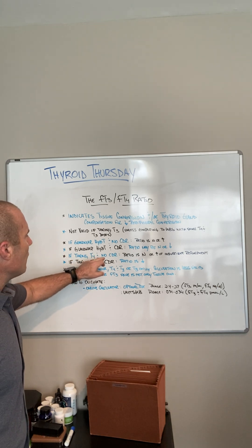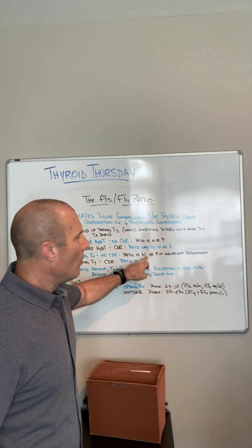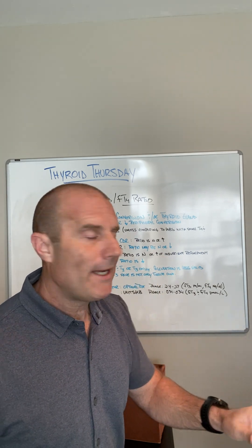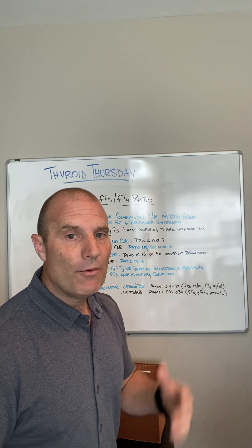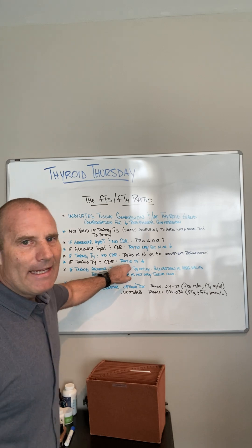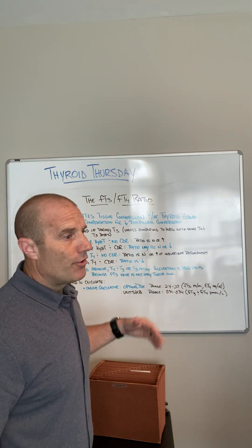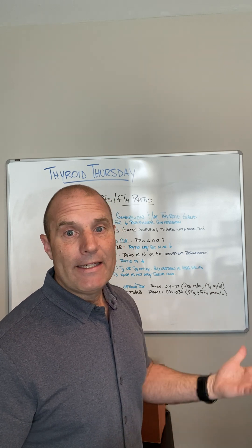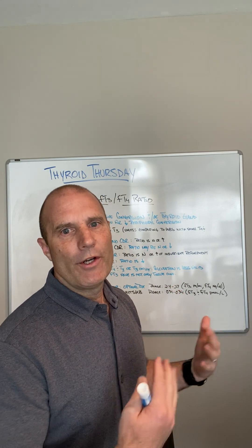If you're taking T4 medication only and there is no cell stress or cell danger response, the ratio is going to be normal — or elevated if there's still insufficient replacement. Even if your TSH is in a more normal range, if that ratio is still elevated, it indicates the cells are starving and doing high conversion, so you might be on insufficient T4. If you're taking T4 and there is a cell danger response, even though TSH may be normalized and T4 looks good, the ratio is going to be low — there's plenty of T4 to saturate the hypothalamus and pituitary, but not enough T3 in the peripheral tissues.